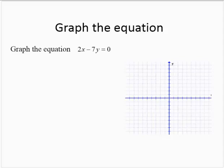Graph the equation 2x minus 7y equals 0. So we start off the same, choose 0 for x and 0 for y, and we'll go from there.